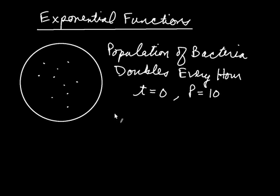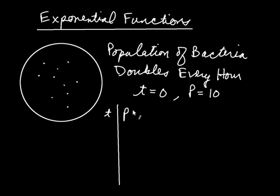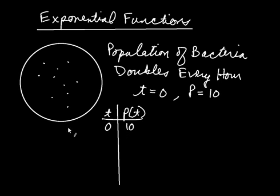Let's keep a little table indicating what happens to the population as the time changes. So this will be time, and right next to it we'll have the population at a given time. When the time is zero, the population is ten — that's because we're starting off with ten bacteria. And when the time is up to one hour, the population is then going to be twenty, because it doubled in that hour.